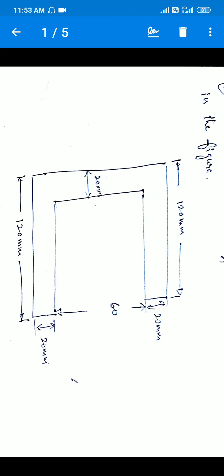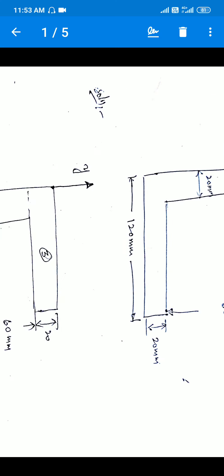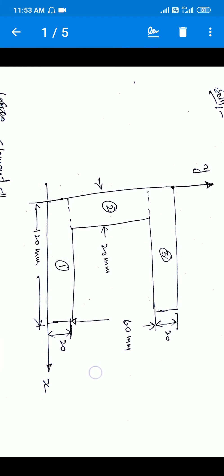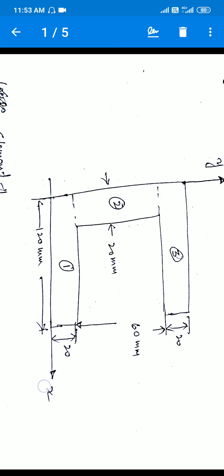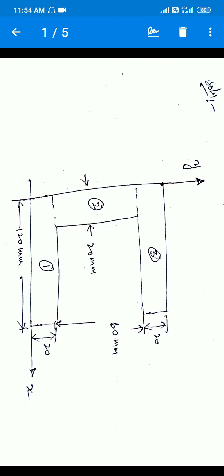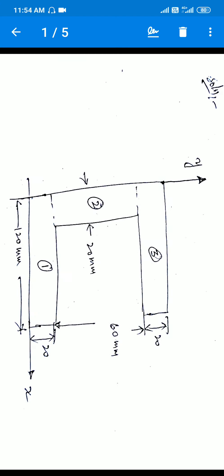This channel section needs to be divided into three elements, since the channel consists of three elements. We will solve this problem by finding the centroid x̄ and ȳ. In the diagram, you can identify three divided elements — element one, two, and three — and we draw the x and y axes to calculate x̄ and ȳ.